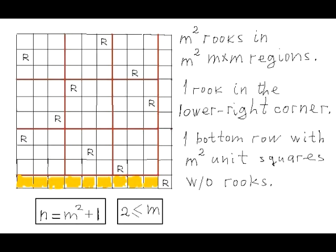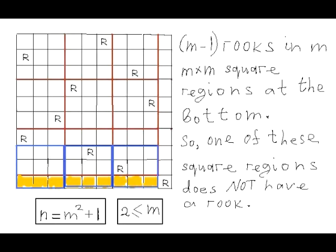That forces the last rook number m squared plus 1 to be in the lower right corner, because placing it in any other square would violate the definition of a peaceful configuration. From that it follows that there is one bottom row which contains exactly m squared unit squares which do not contain any rooks. Now let's examine the m minus 1 rows adjacent to this bottom row. Each of these m minus 1 rows contains exactly one rook, so the total number of rooks in the combined rectangular area at the bottom is m minus 1. Thus at least one of the m square regions m by m drawn side by side in these m rows at the bottom does not contain any rooks.